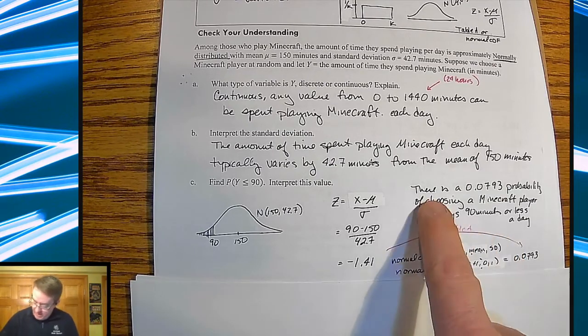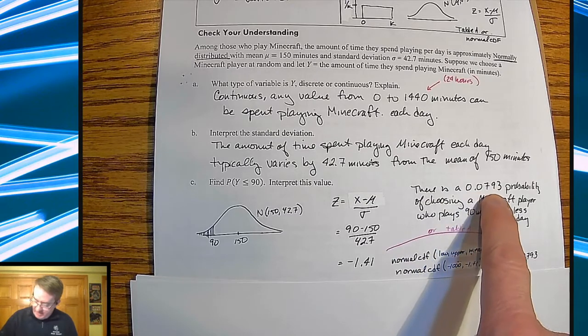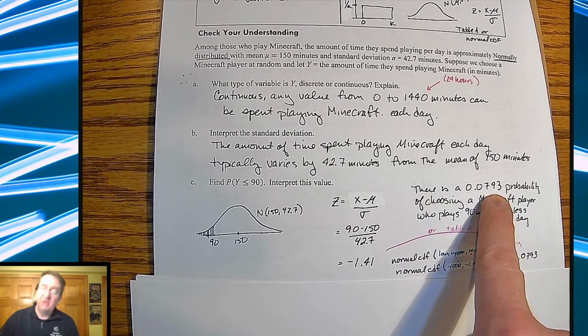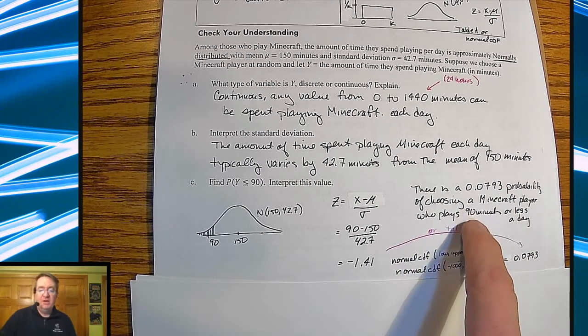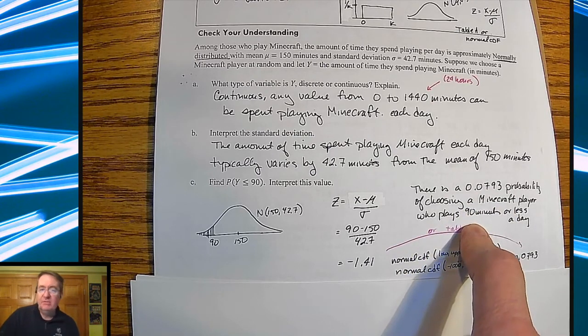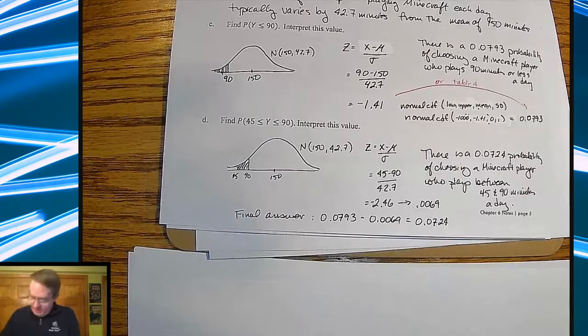So we get 0.0793. What does that mean? There is a 0.0793, or if you're old school, 793 ten-thousandths probability of choosing a Minecraft player who plays 90 minutes or less a day. So right around 8%.